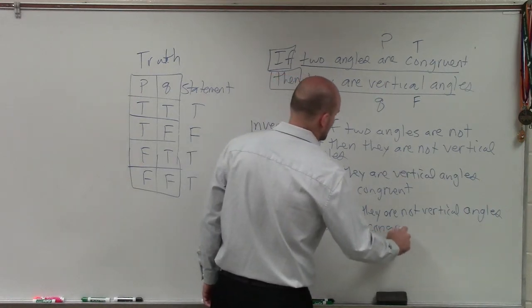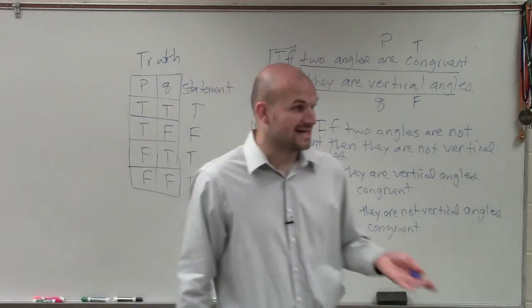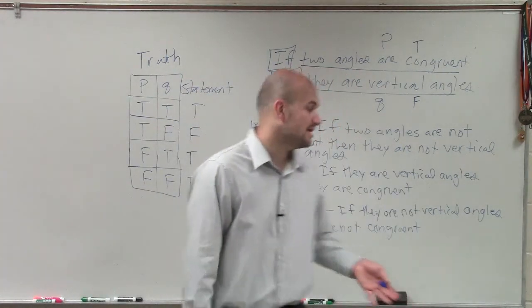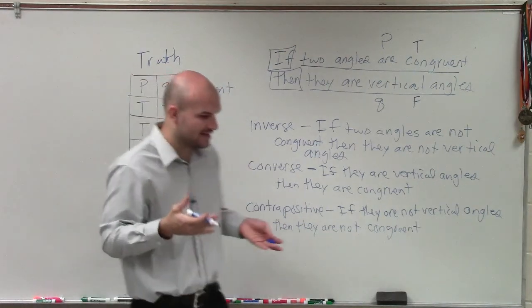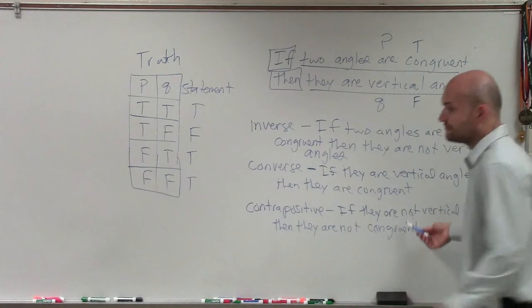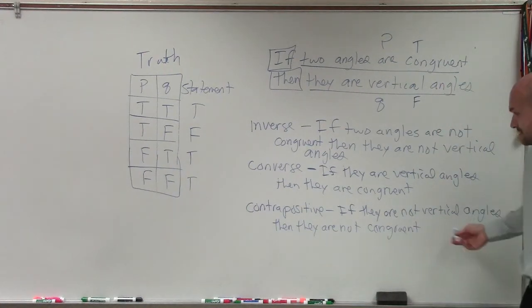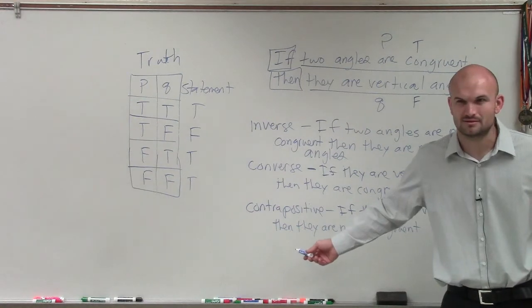And ladies and gentlemen, remember, this goes into our logically equivalent statement. If you remember, we said that a conditional statement and its contrapositive are going to be logically equivalent, because if they are not vertical angles, so you don't have vertical angles, does that mean you can't have congruent angles? No, you can have congruent angles that are not vertical, right?